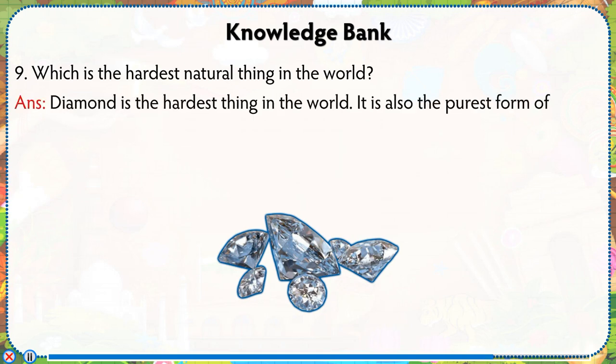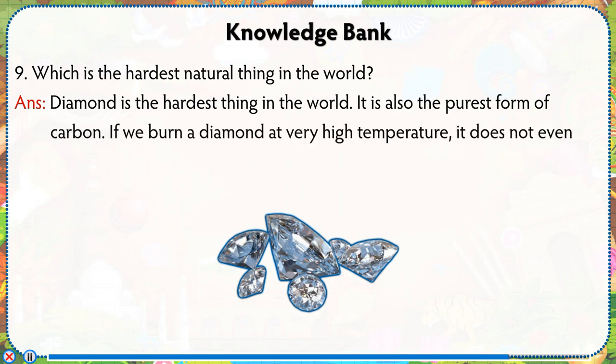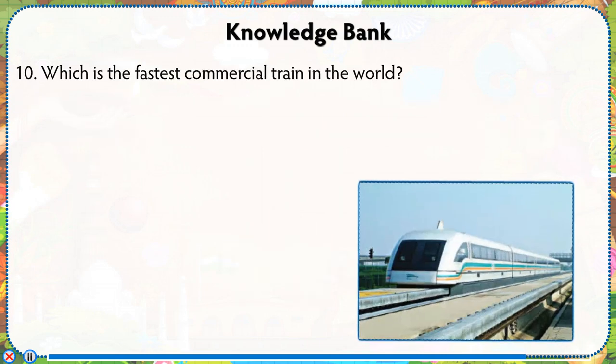Which is the hardest natural thing in the world? Diamond is the hardest thing in the world. It is also the purest form of carbon. If we burn a diamond at a very high temperature, it does not even leave any ash.